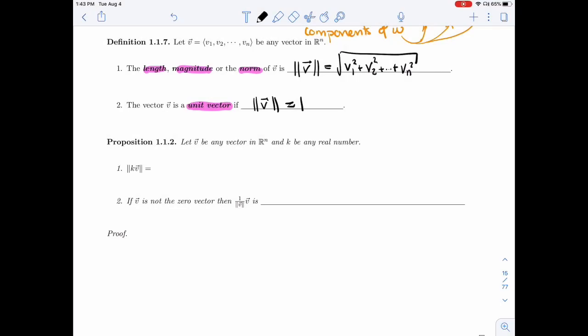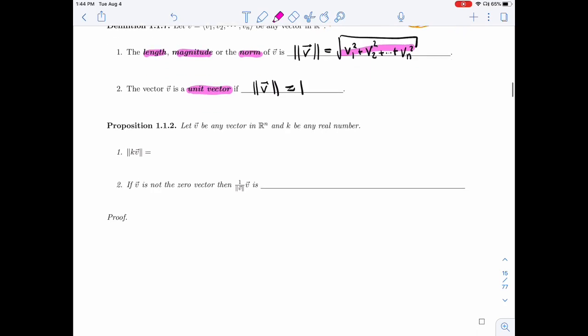Now that we have our definition of a length of a vector, now that we know that the length of a vector is the square root of the sum of the square of the components, we're ready to write down and prove this proposition.